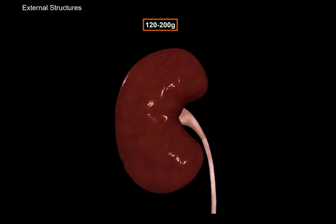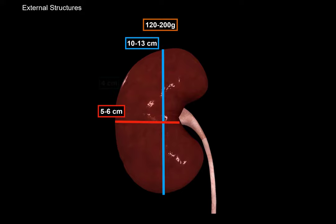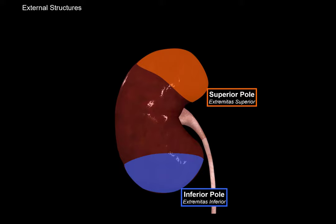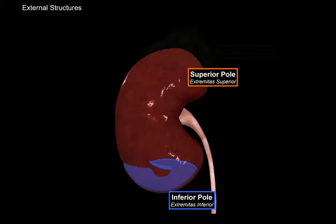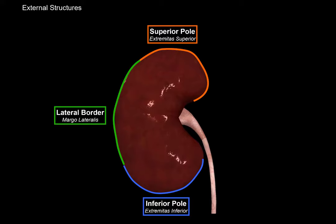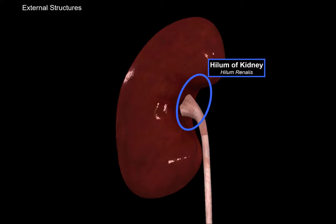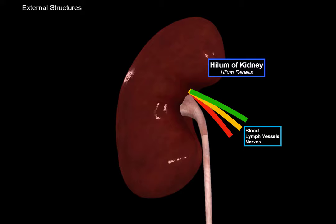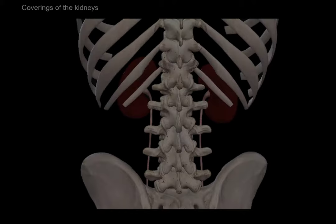Let's start with the kidneys' anatomy by looking at the external structures. The kidneys are about 120 to 200 grams, about 10 to 13 centimeters long, 5 to 6 centimeters wide, and about 4 centimeters thick. The kidneys have an inferior pole and a superior pole. On the superior pole, you'll find the suprarenal gland resting on it. They also have two margins: the lateral border and the medial border. The medial border has an area called the hilum of the kidney, which is the only place structures can go in and out — blood vessels, nerves, lymph vessels, and the ureter.